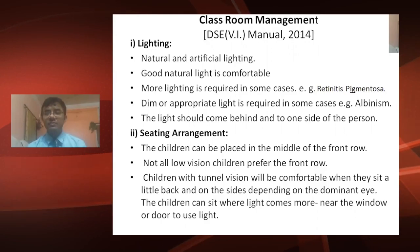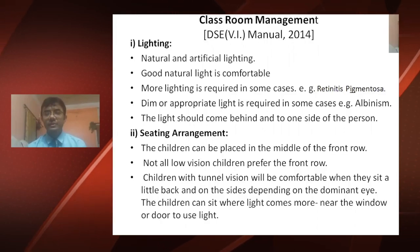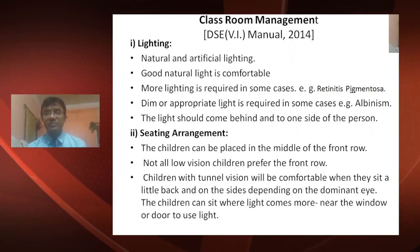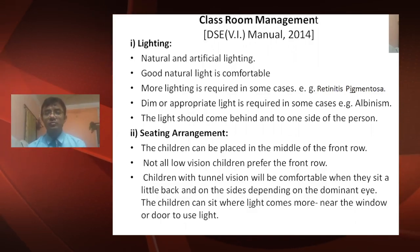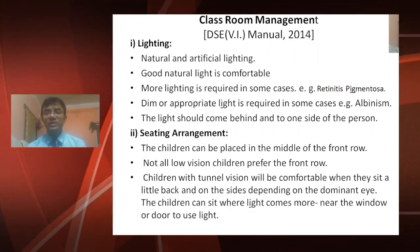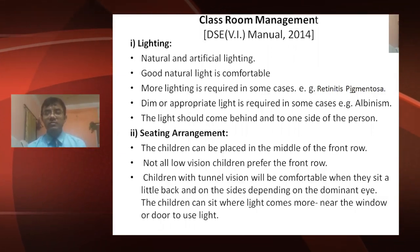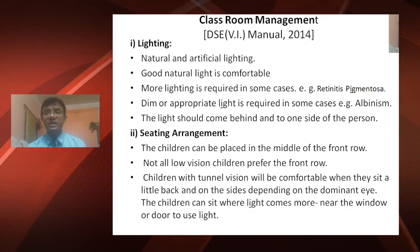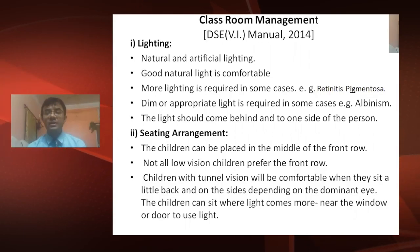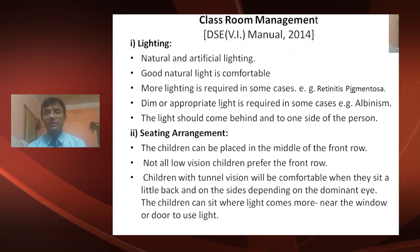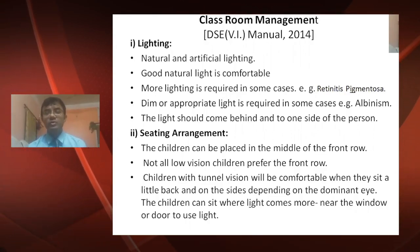The light should come from behind and to one side of the person. The next factor is seating arrangement. Children can be placed in the middle or front row, though not all low vision children prefer the front row. Children with tunnel vision will be more comfortable sitting a little further back and to the sides, depending on their dominant eye. Children can also sit where light is strongest, for example near the window.